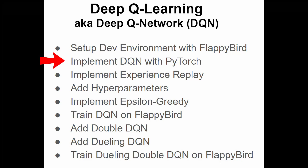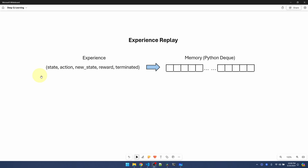In the last video we created the DeepQ network module with PyTorch. In this video we'll implement experience replay and also add in the hyperparameters. To train a deep network we need to send in a lot of examples in order for the network to generalize the pattern and learn from it. We can't just show it one instance of a certain situation — we need to show it the same or similar instances over and over again before it can learn. To overcome this challenge we can use something called experience replay.